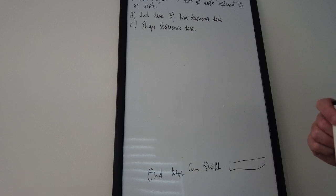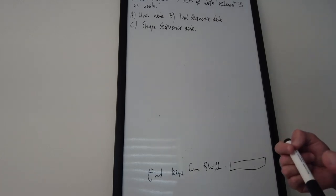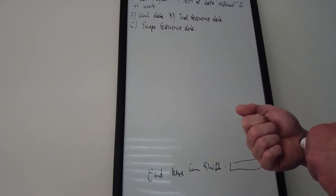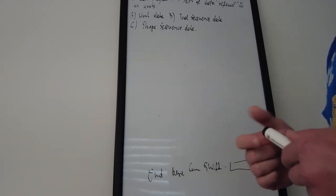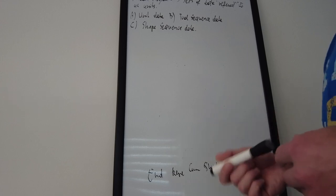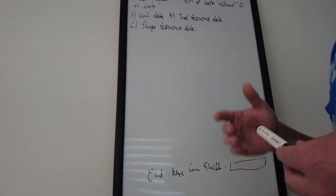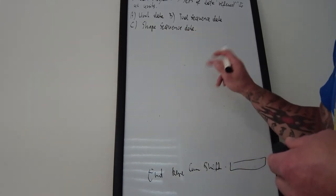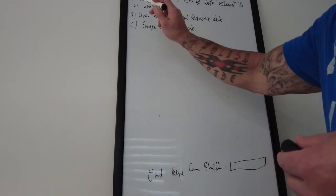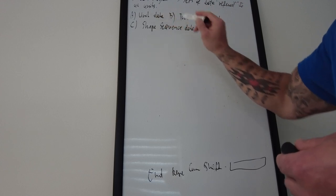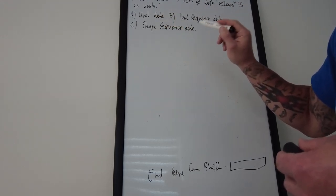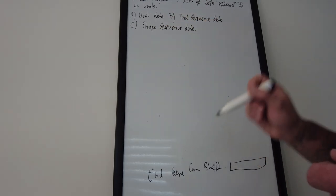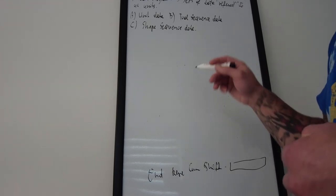This might sound complicated depending on how much you know about programming, but this is mostly for somebody that's starting out. When you write a program, you open your page and you can have many unit data entries — many A's — but you cannot have tool sequence data or shape sequence data by itself. I'm going to explain this in a second.